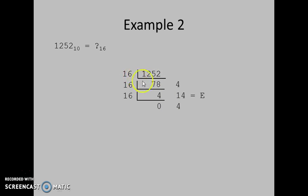So 1252 divided by 16 is 78 with remainder 4. 78 divided by 16 is 4 with remainder 14, and 4 divided by 16 is 0 with remainder 4.